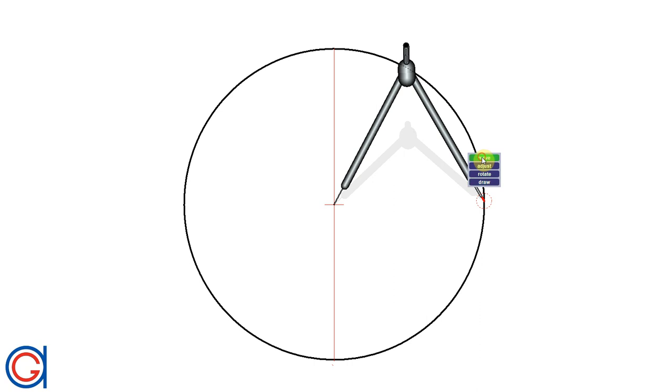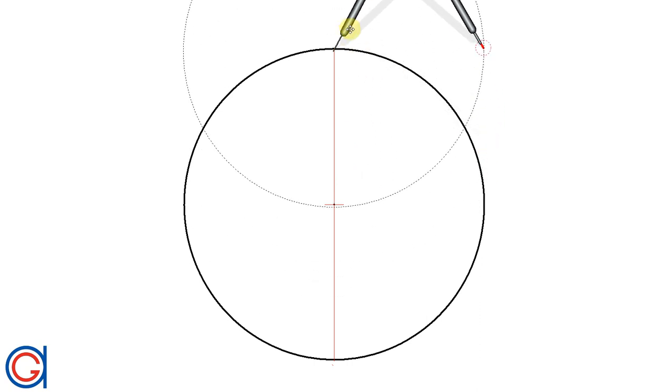To do this, we set the compass to the same radius as the circle and centering on the top side of the vertical diameter, we scribe two arcs which cut the circumference at two points as can be seen here.